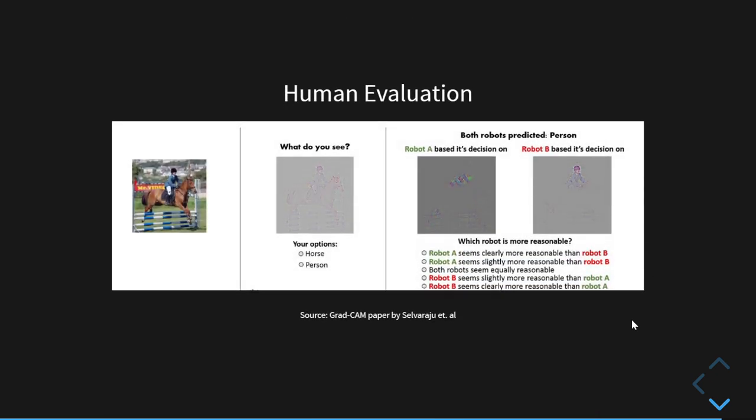In order to evaluate GradCam, the authors of this paper can also do human evaluation studies. Here we can see that since we see both the horse and the person in this image, the answers to this will most likely not be conclusive. So the answers may look like 60% horse and 40% person, for example, and not like 95% horse. So in this way, they do the evaluation and reach at the conclusion that GradCam is much more class discriminative than other techniques like guided backpropagation. Here we can see another question related to how reasonable the visual explanations are. So many people would say here that robot B is more reasonable than robot A.